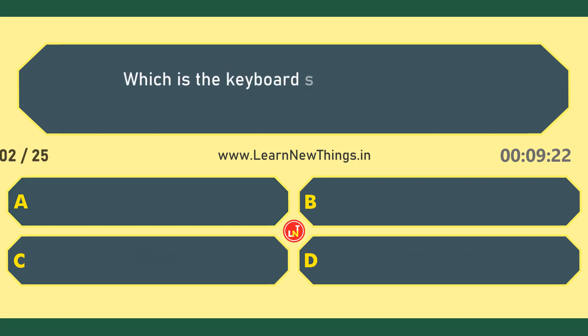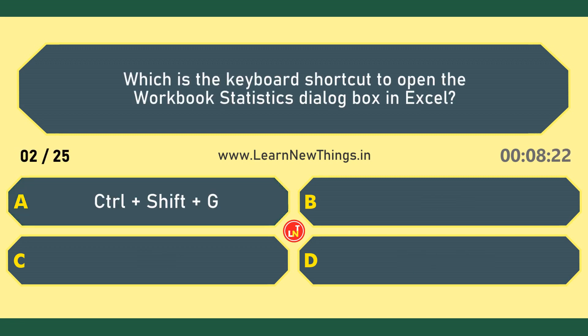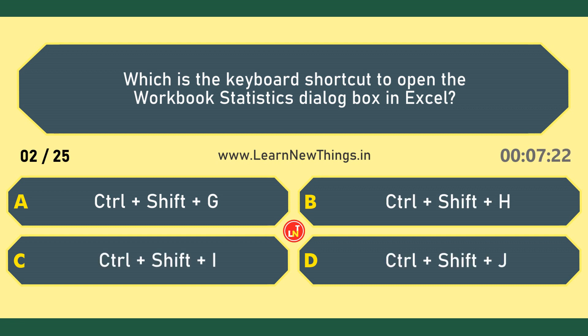Which is the keyboard shortcut to open the Workbook Statistics dialog box in Excel? Ctrl-Shift-G.